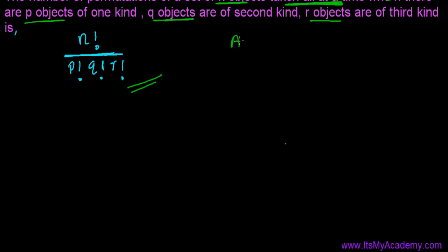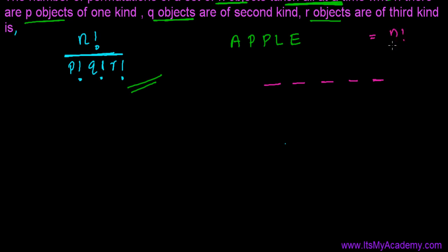Let's say I have the word Apple — A, P, P, L, E. This is a five-letter word. As we learned in theorem two, if we arrange n letters in n different places, the total arrangements equal n factorial. Here we have five letters being arranged in five places, so that would simply be five factorial.